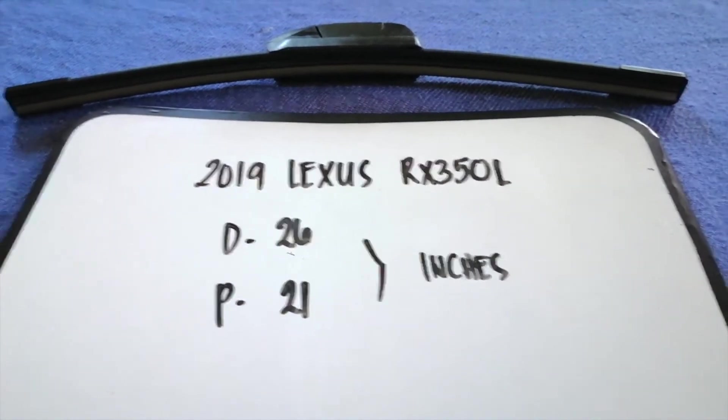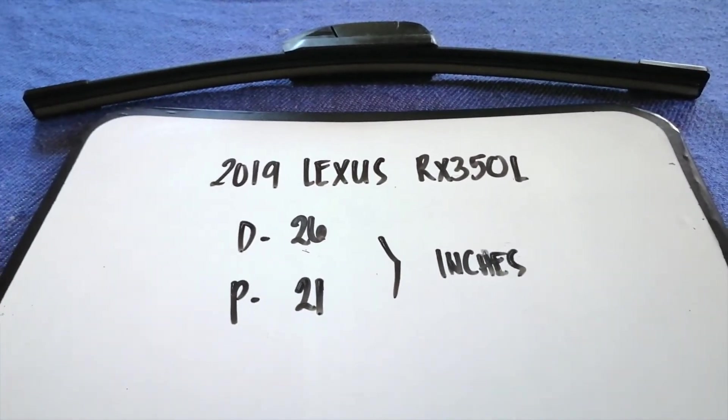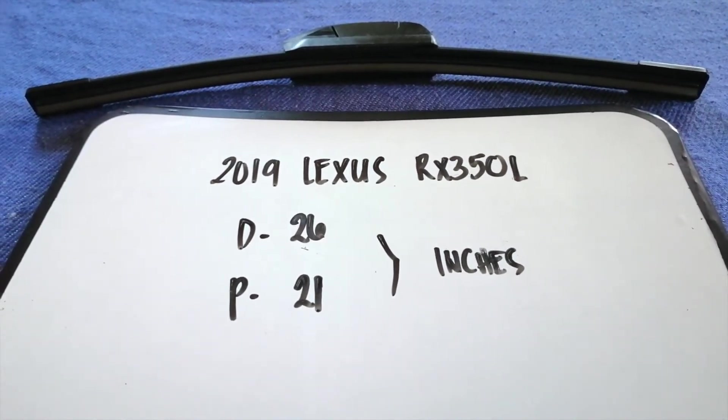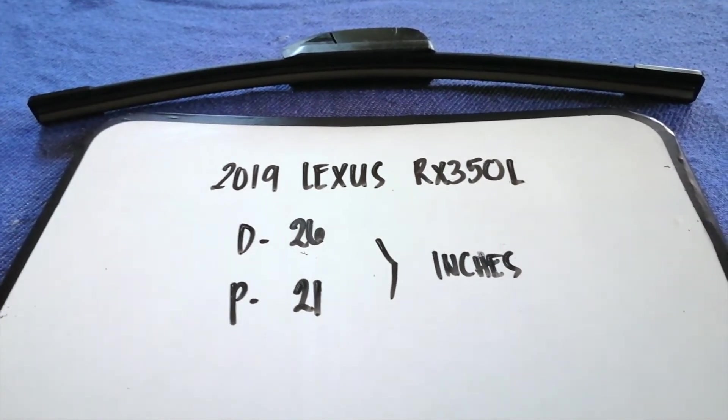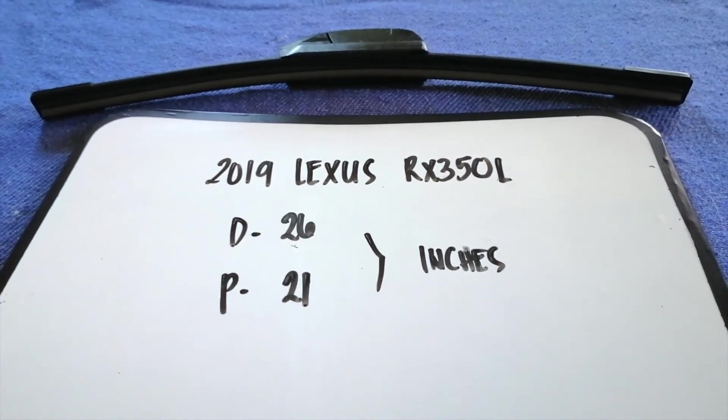I will try to leave the info there as well. So the wiper blade replacement size for the 2019 Lexus RX 350L is 26 inches for the driver's side and 21 inches for the passenger side.